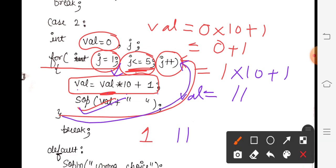Next time again when it will move back, so third time j will get plus plus. j ki value will be 3. 3 is less than 5? Yes. Now val = val × 10. Val ki value is 11. 11 × 10 + 1 will be 111. So val will be 111. So here when you will print for the third time, it will print 111. In the same way...